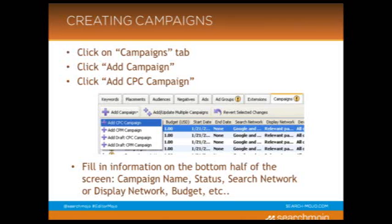Then below on the interface, it's going to ask you to fill out information. You'll put the campaign name, there's a scroll for status — whether you want it to be live or paused. Then you choose whether you want it to be search network or display network. Mostly what I do is search network, so I would choose search network. And this is also where you put your daily budget for the campaign.